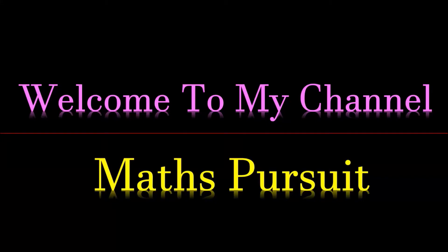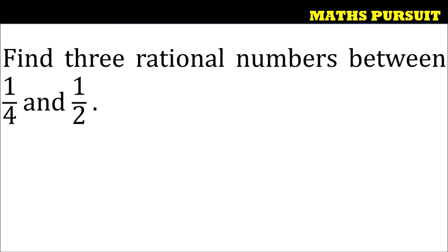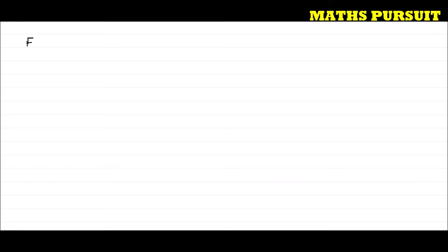Welcome to my channel Maths Pursuit. Today we'll look into the chapter called Rational Numbers. The given question is: find three rational numbers between 1/4 and 1/2.